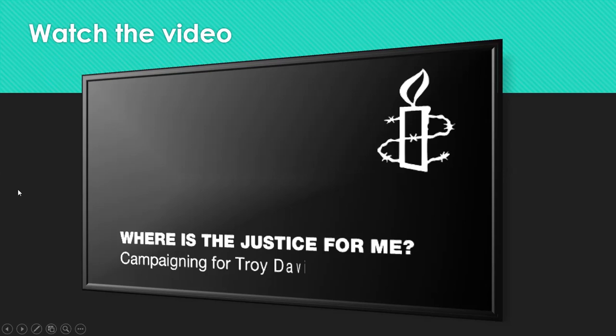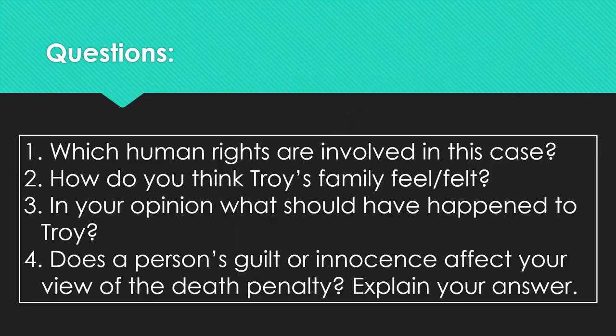We've watched the video — if you need to, you may watch that again. Here are some questions I would like you to answer. One: which human rights are involved in this case? Go back to the slide with the European Convention of Human Rights list — those 16 human rights — and decide which ones are involved. Write those down. Two: how do you think Troy's family feel or felt? Three: in your opinion, what should have happened to Troy? Full sentence and give a reason. Four: does a person's guilt or innocence affect your view of the death penalty? Explain your answer. Pause this video now and write down your answers to all of them in full sentences.